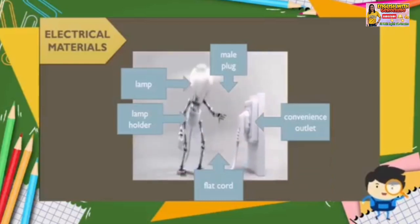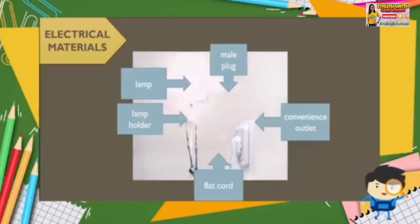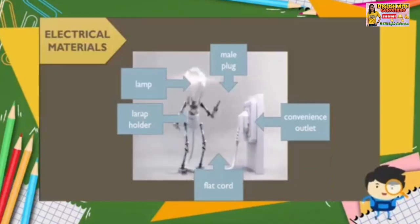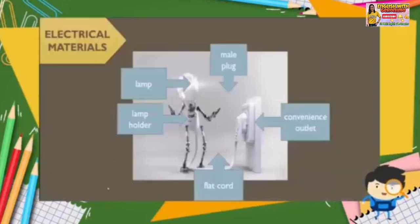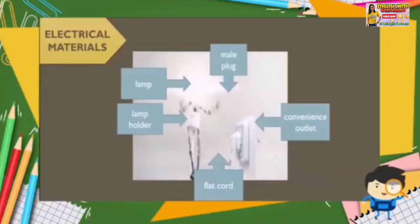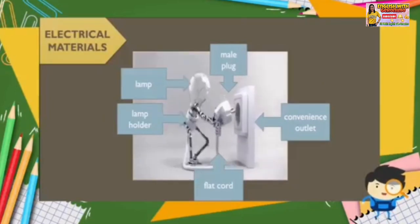The first one is lamp — also called a bulb. The next one is lamp holder, also called lamp socket or receptacle. It is used to hold and protect the lamp. From the word itself — holder, from the root word hold — meaning it holds the lamp in place.